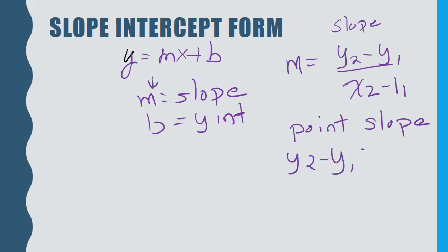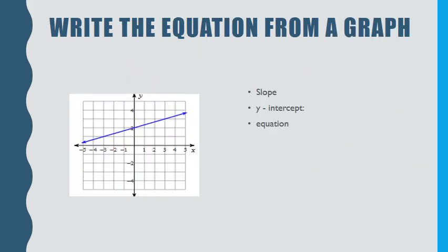To write any equation from a graph, we have to find the slope and the y-intercept. Remember, slope-intercept form is y equals mx plus b. To find the slope, pick two points that you can easily see on the graph.